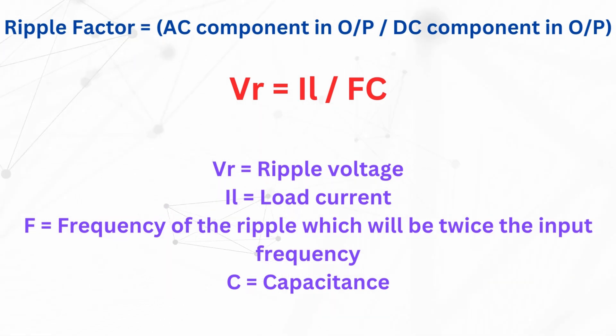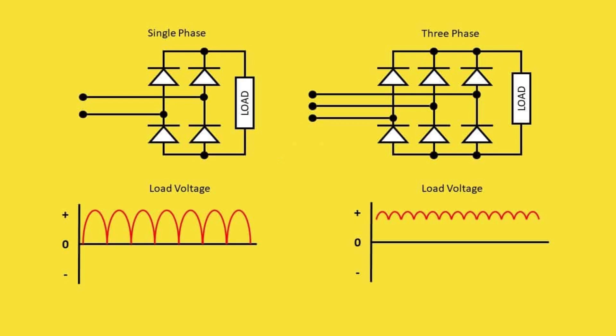Further, the bridge rectifiers are primarily of two types: single phase rectifiers and three phase rectifiers. In addition, each of these can be either uncontrolled or half controlled or full controlled. If you want to know about these rectifiers in detail, please comment below. I will make another video on these topics.